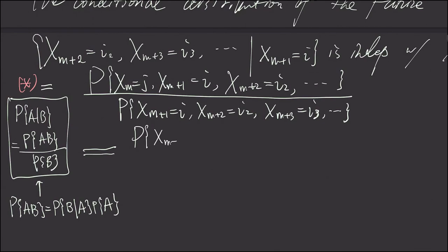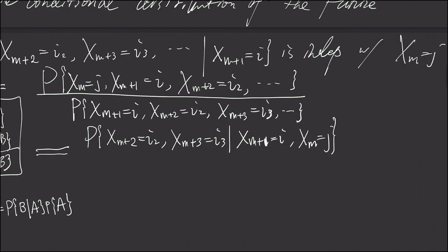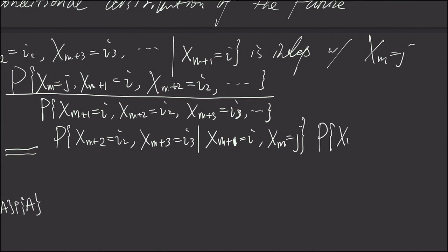So what happens is probability of X sub M plus 2 is i2, X sub M plus 3 is i3, conditioned on X sub M plus 1 is i and X sub M is j, times the probability of X sub M plus 1 is i given X sub M is j.